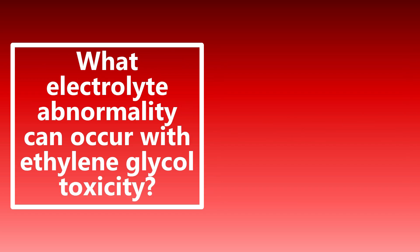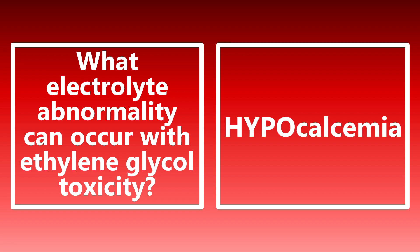What electrolyte abnormality can occur with ethylene glycol toxicity? This is going to be hypocalcemia. Ethylene glycol metabolizes to oxalic acid, and that oxalic acid can combine with calcium to create calcium oxalate — a common cause of kidney stones. So with ethylene glycol toxicity, think hypocalcemia.